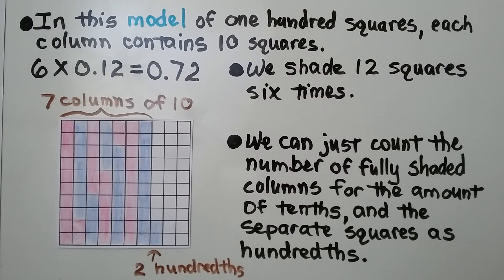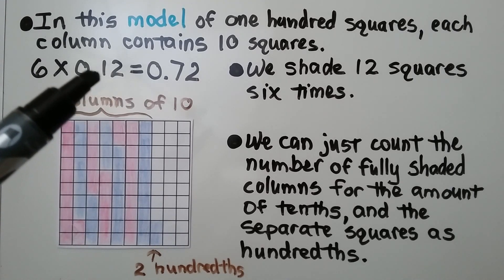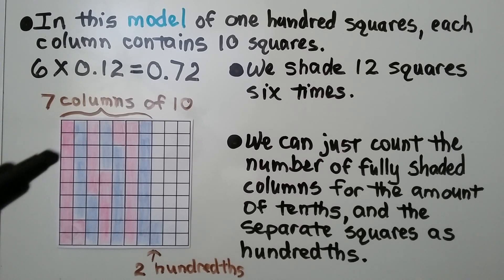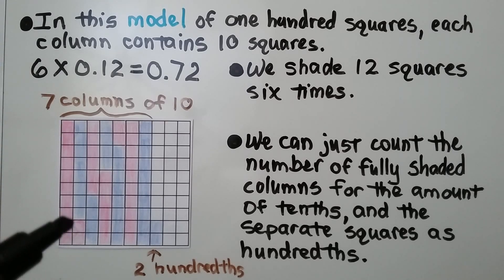In this model of 100 squares, each column contains 10 squares — there are 10 coming down. We have six times twelve-hundredths. We shade in 10, then 11, then 12 — so that puts two squares in this column.